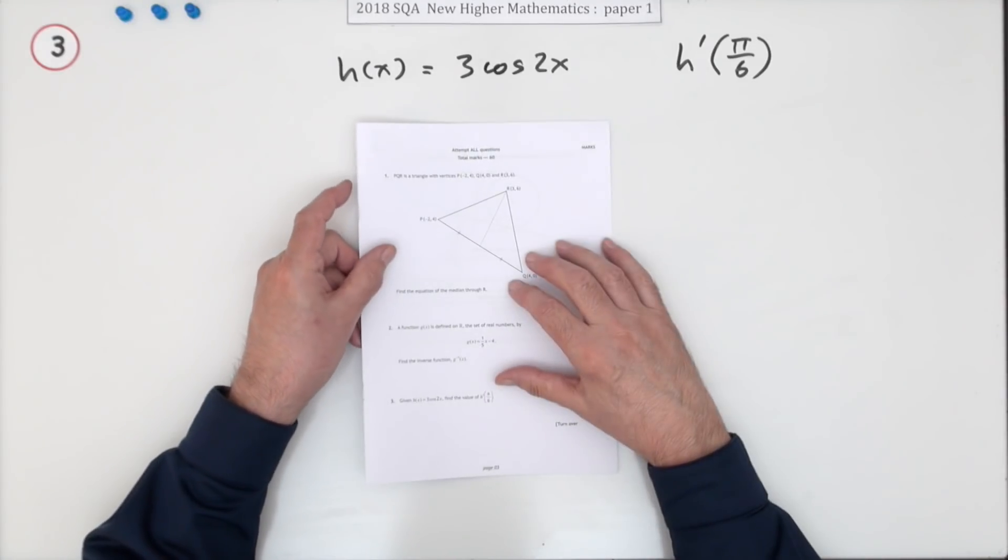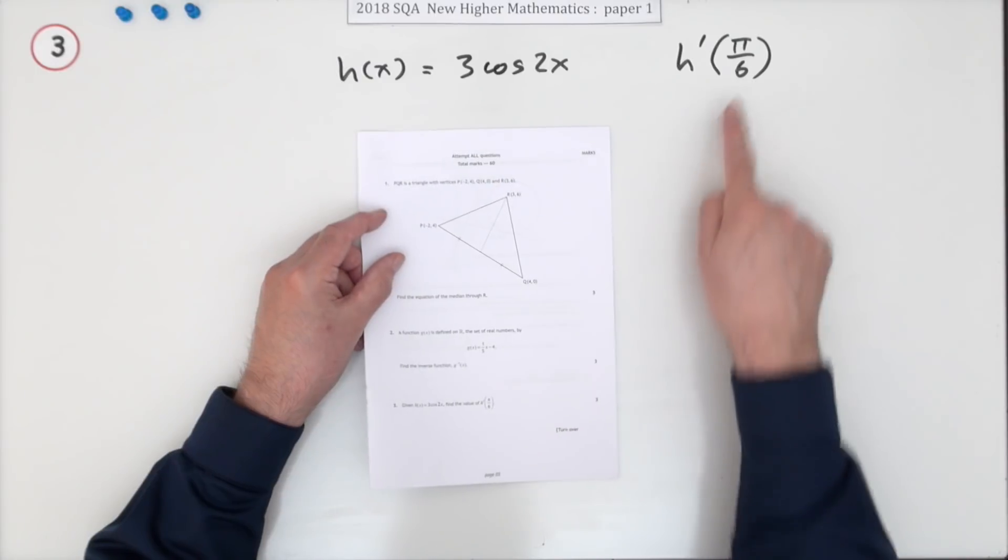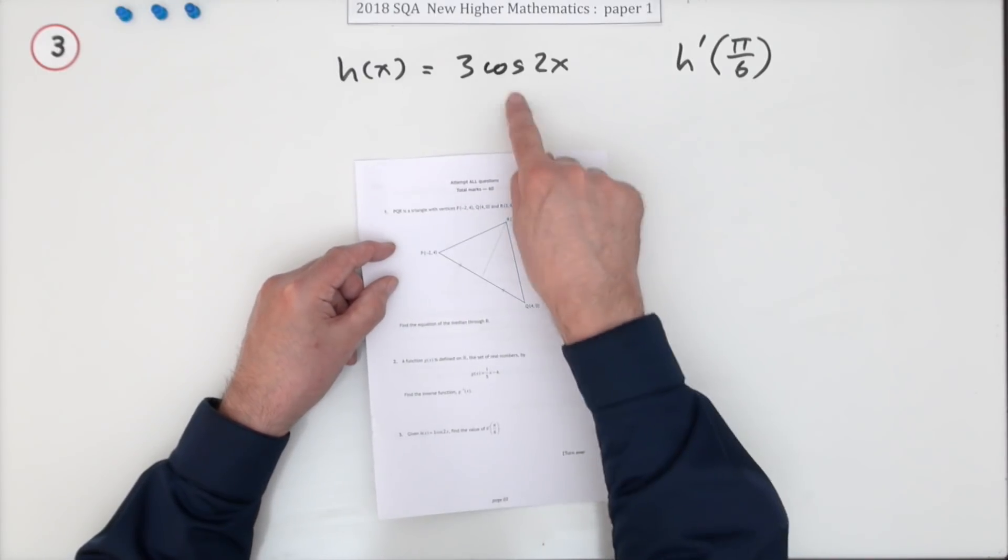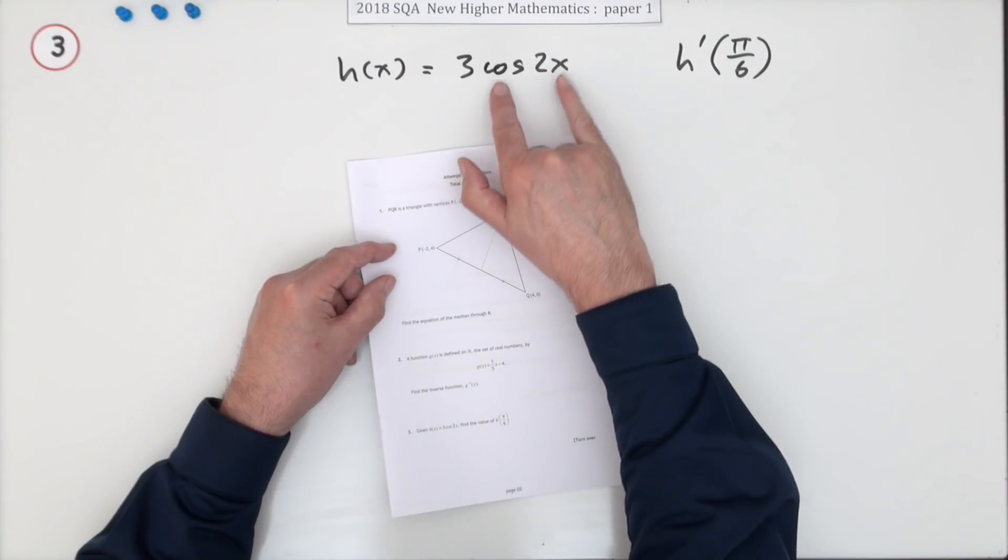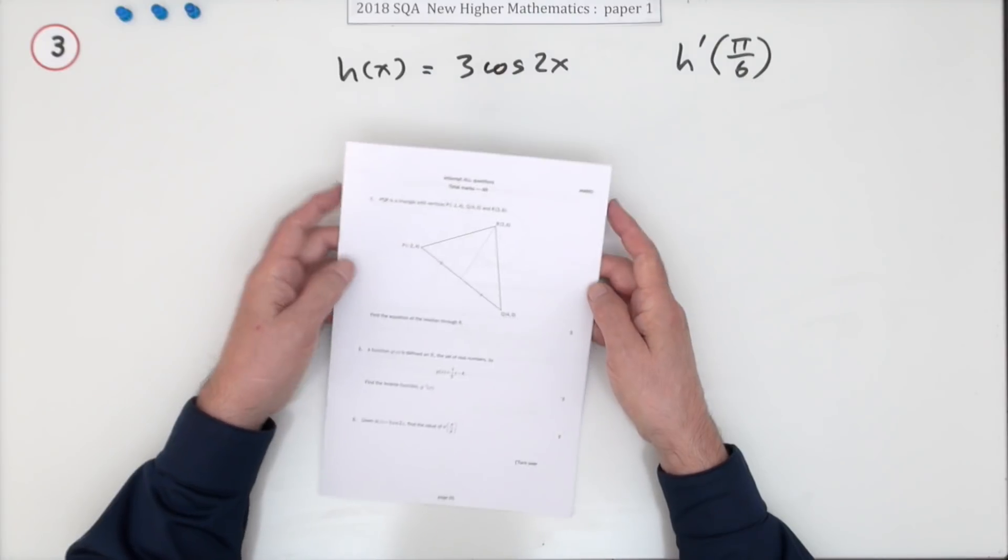Number three from the 2018 SQA Higher Maths paper one. Three mark question here for evaluating a derivative, the derivative of a trigonometric function. Notice it's a function of a function, so the chain rule applies.